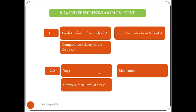When participants are assigned to an intervention, program, or treatment, this is called an experimental study. The previous school salary example is non-experimental — researchers simply contact graduates and ask about their salary. The yoga and meditation example is truly experimental because participants are assigned to conditions. I want to emphasize that the independent samples t-test is employed in both experimental and non-experimental research.